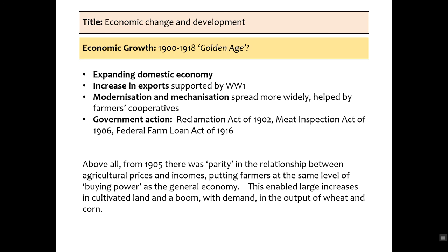From 1905, there was parity in the relationship between agricultural prices and incomes, meaning farmers now had purchasing and buying power. This enabled large increases in cultivated land that led to a boom supplied by demand, increasing output of wheat and corn.